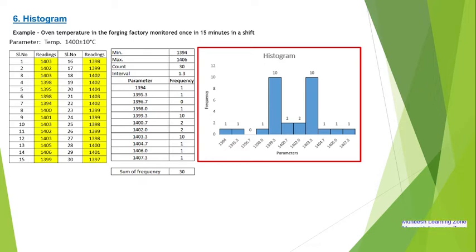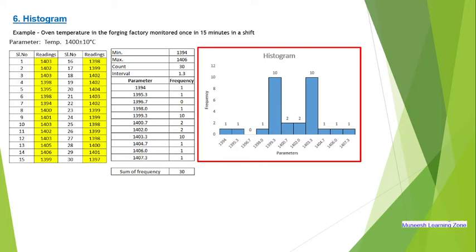The number of readings can be more than 30 — like 50, 100, 200, or 300. If we look at the intervals, we can change them using a formula, which we'll see in a later video. Looking at the display, we have 30 readings shown in yellow. If we look at the actual readings and the process parameter specification.